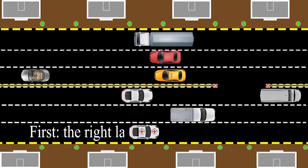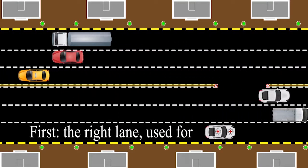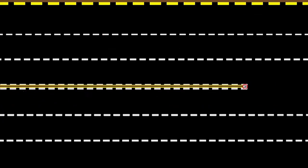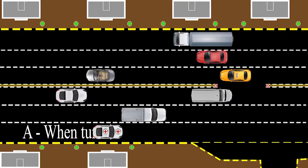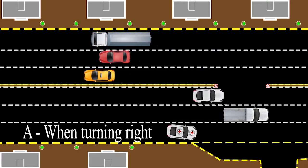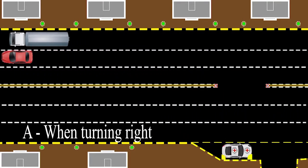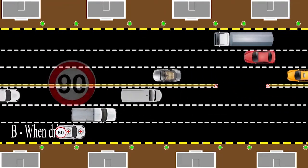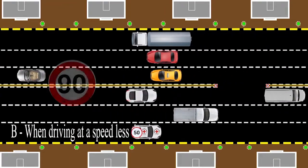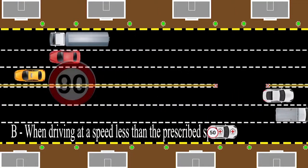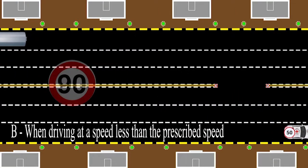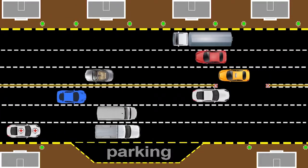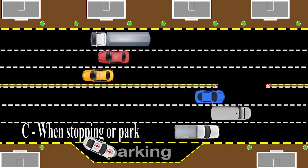First, the right lane. Used for: A) when turning right; B) when driving at a speed less than the prescribed speed; C) when stopping or parking in the permitted areas.